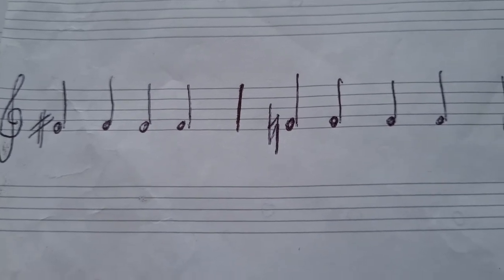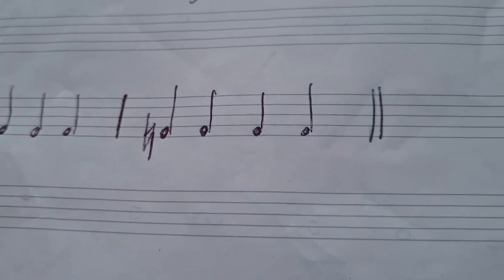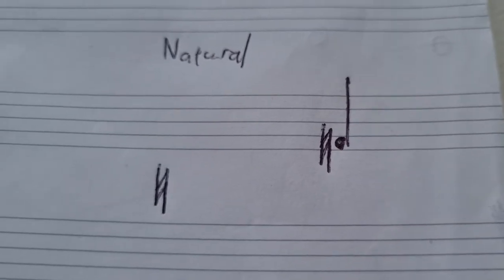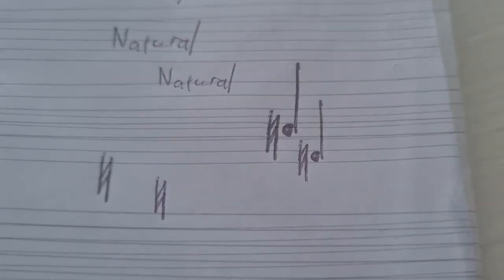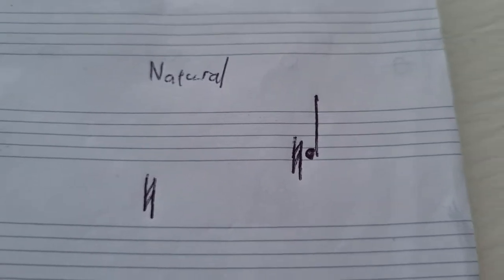The reason I call it 'F natural' is this: if you've already sharpened an F in that bar, you can't just write F again — you would have to put a natural sign next to it. A natural sign almost looks like a little lightning bolt, and it goes next to the note if you just want to play it in its natural form. So F sharp is the second valve — just a quick note — and we'll move on to C sharp.